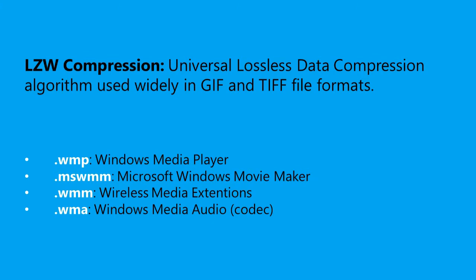.wmp is Windows Media Player. .mswmm is Microsoft Windows Movie Maker, and the first version of Windows Movie Maker came with Windows Me. .wmm is wireless multimedia extension, and .wma stands for Windows Media Audio.